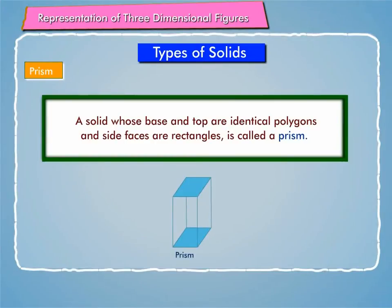Cuboid, cube, cylinder, etc. are all special types of prism.